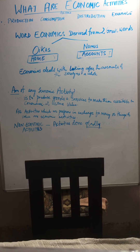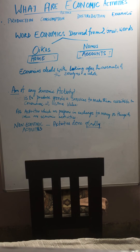We group economic activities into four parts: production, consumption, distribution, and exchange. Let's take up production. Production is that economic activity which is concerned with the addition of value in goods. For example, when you take a raw material and convert it into a finished product, that is production. If you take cotton and you change it into cloth, that is production.